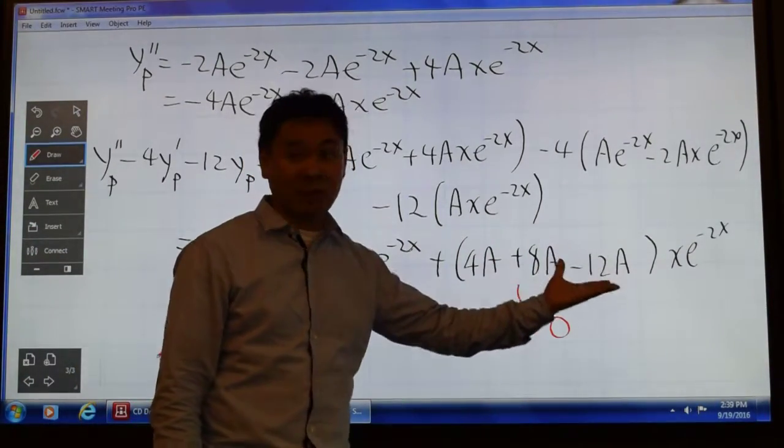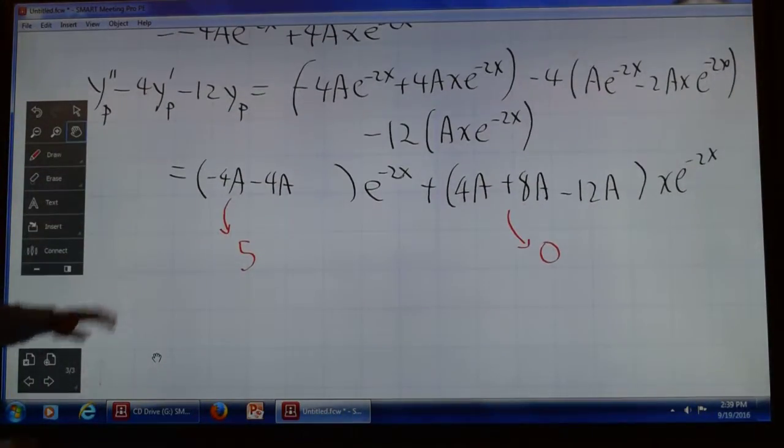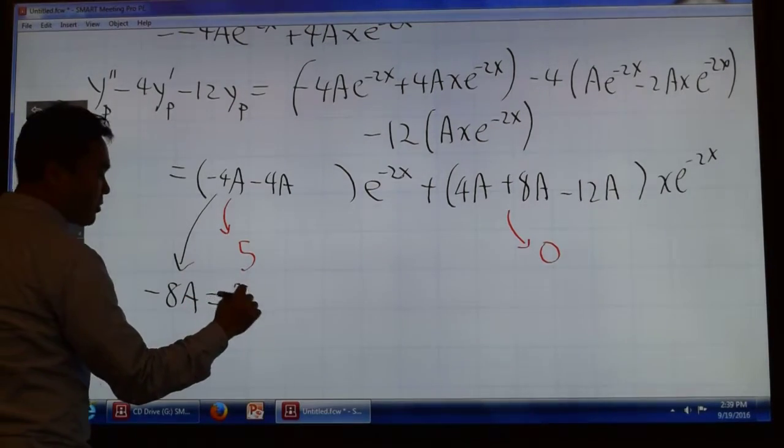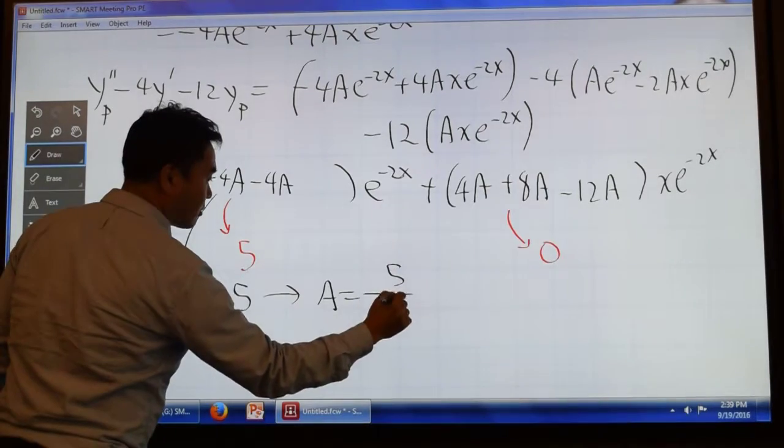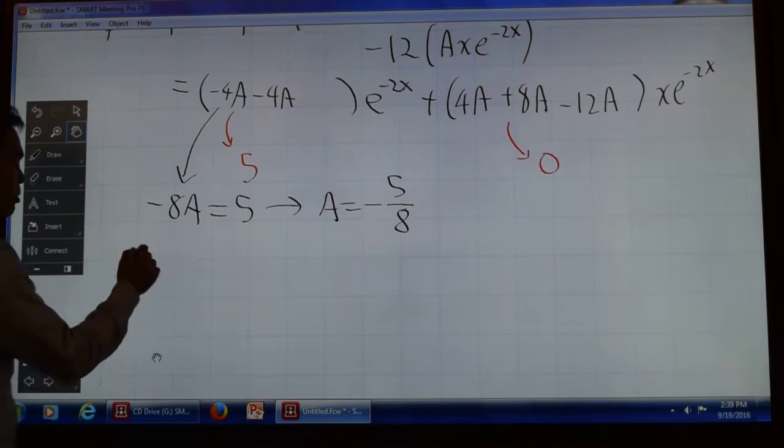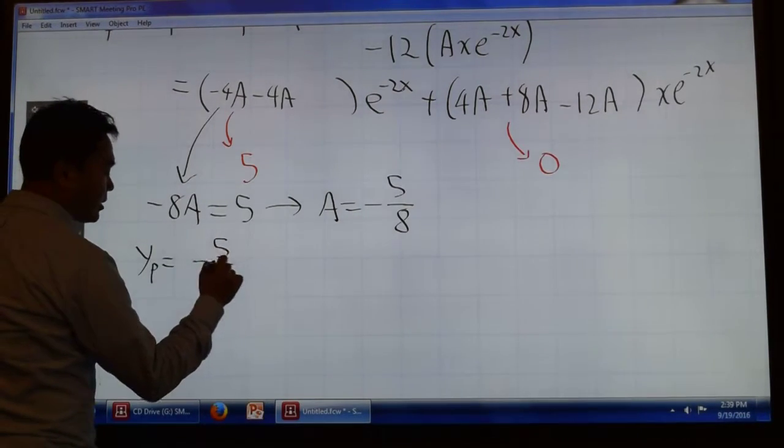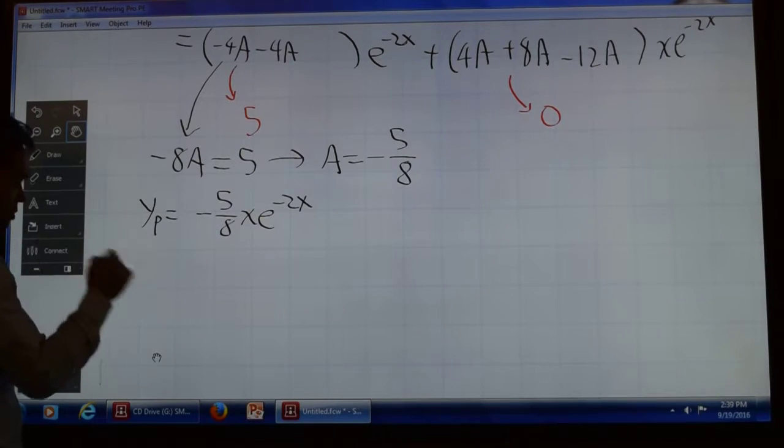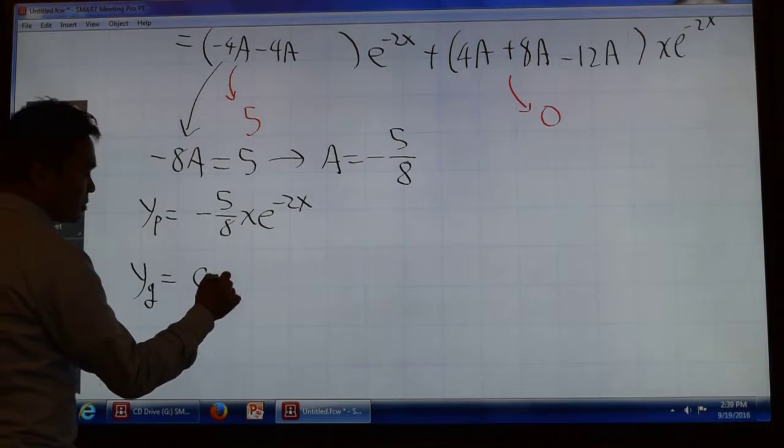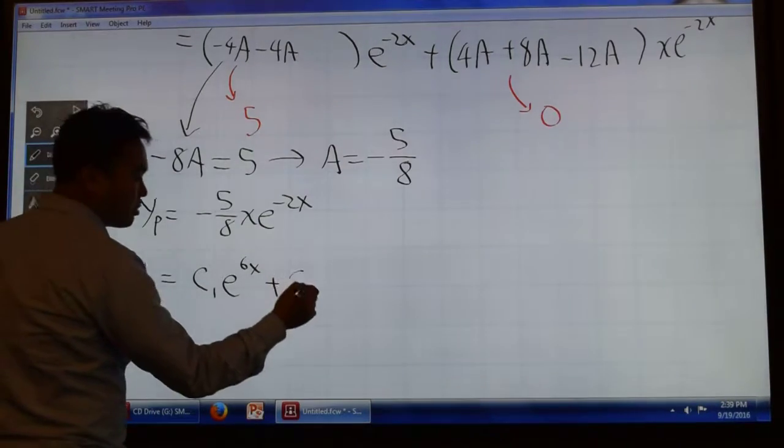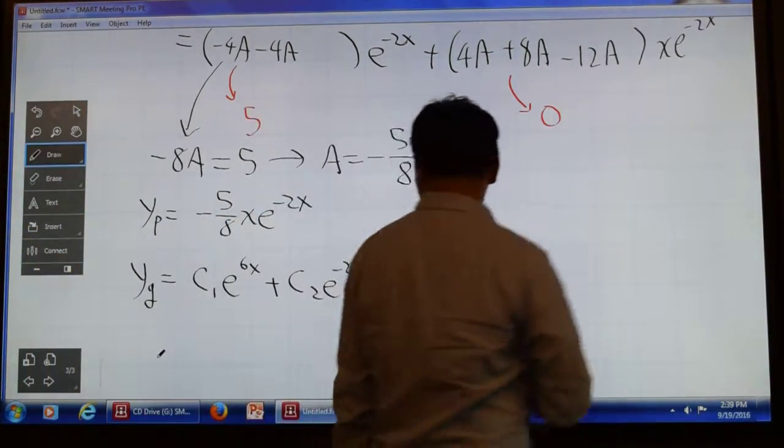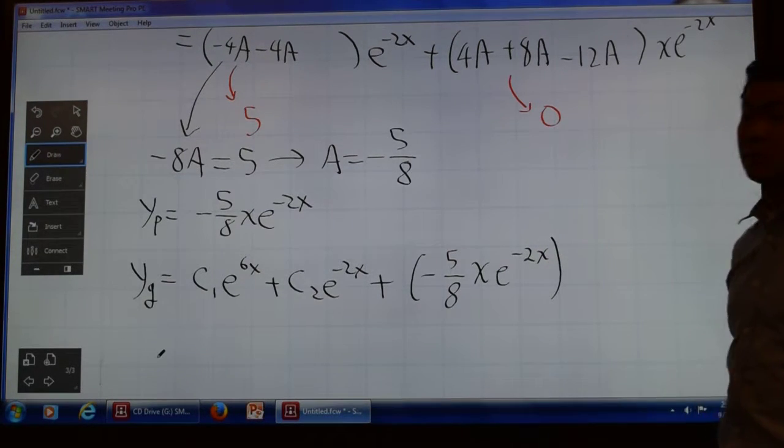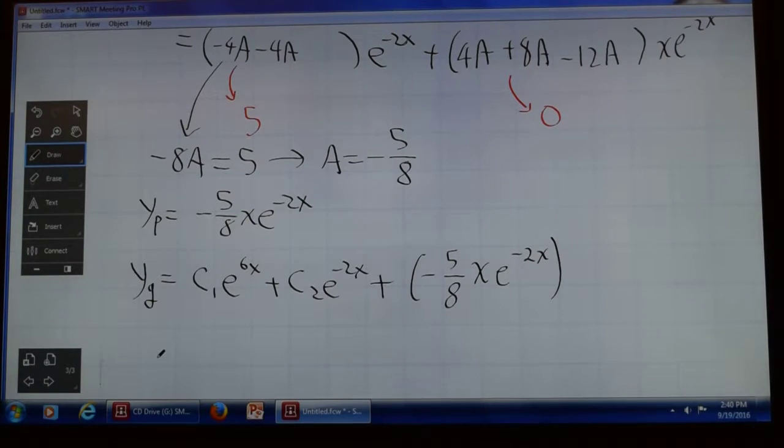So, this is already 0. 4A plus 8A is 12A. 12A minus 12A is 0. So, that's already satisfied. The only thing that we need to satisfy is now that negative 8A, which is this one, negative 4 plus negative 4 is negative 8A, should equal to 5, giving you that A is negative 5 over 8. And therefore, what's your YP? Negative 5 over 8 times X times e to the negative 2X. And then, finally, the general solution to the differential equation is the complementary solution plus that one particular solution. That's how you solve the difference.